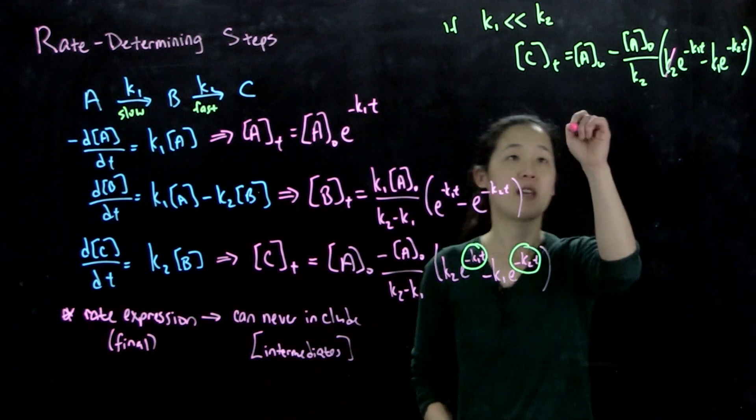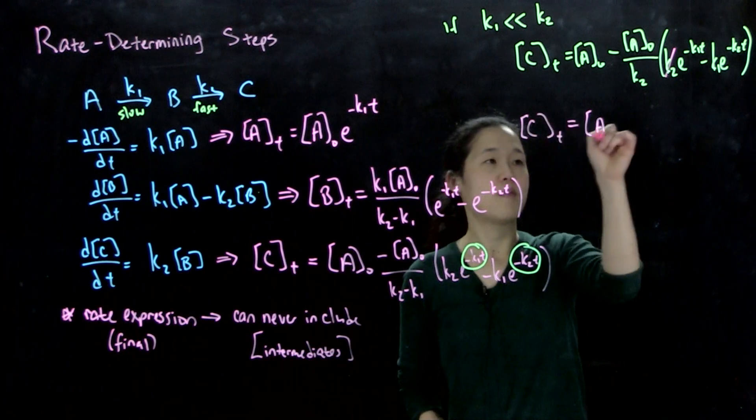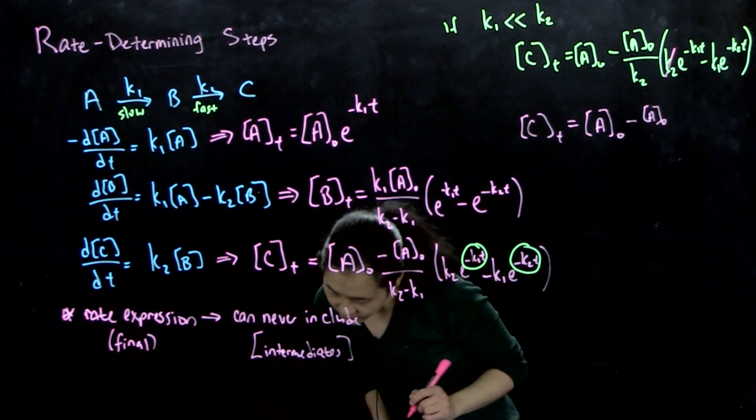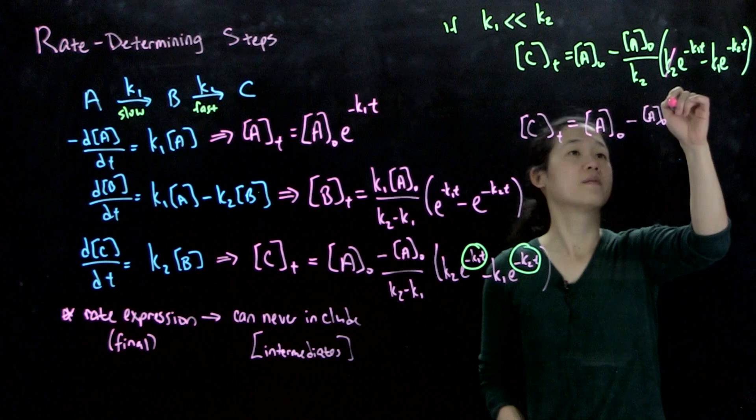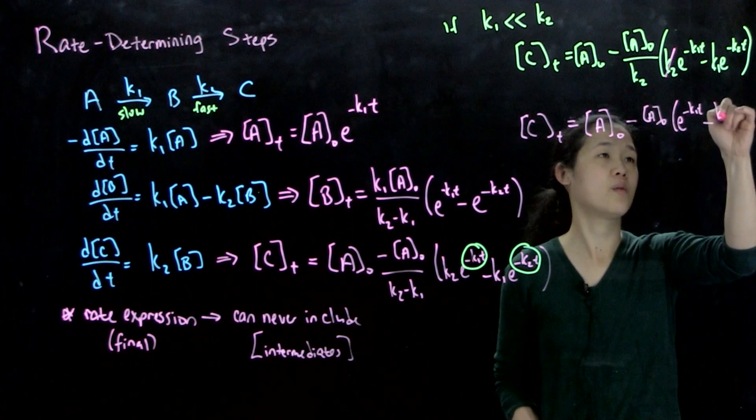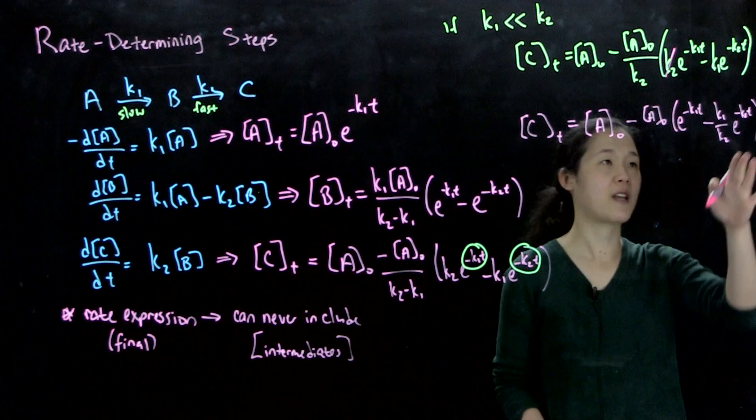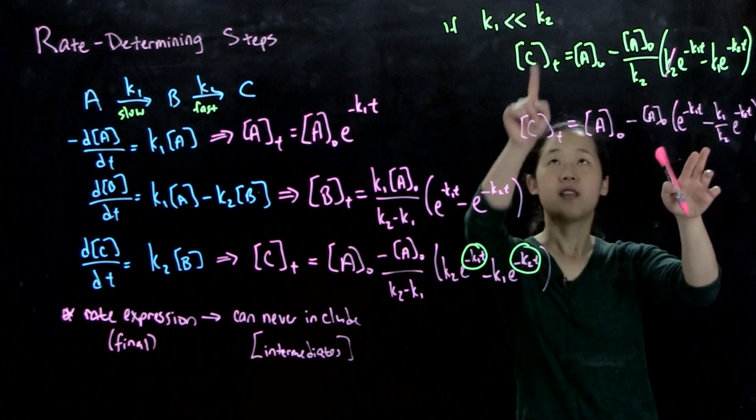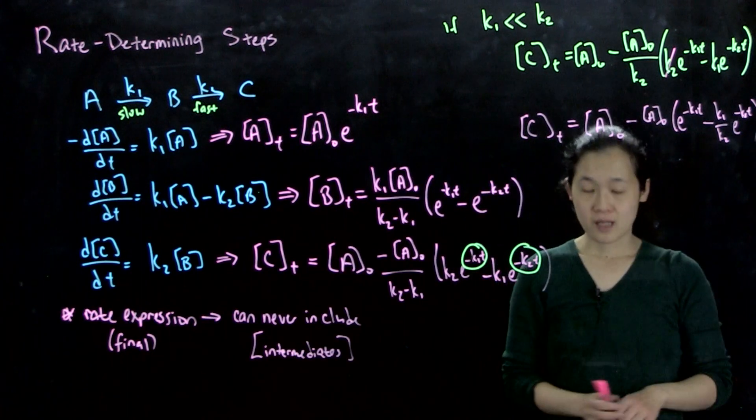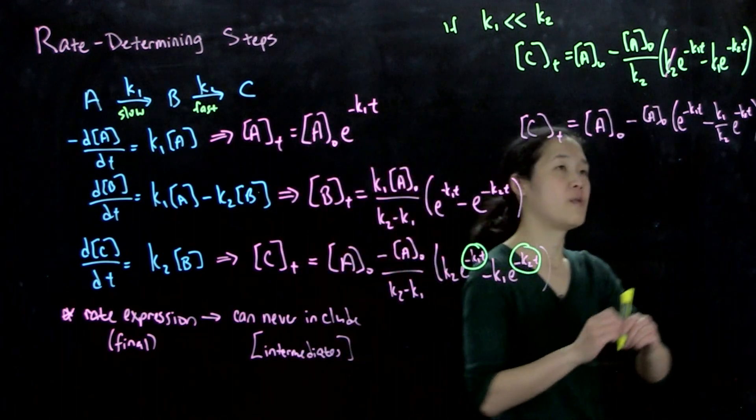And then what we'll end up getting is that C over time equals A0 - A0 e^(-k1t) - (k1/k2) e^(-k2t). So here, k1 over k2, we said that k2 is very, very much bigger than k1. So we think about it, k1 over k2 is going to be approximately 0 because let's say 1 over 100 is approximately 0. So we'll cross this out.